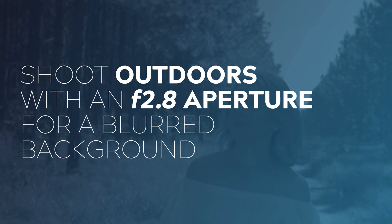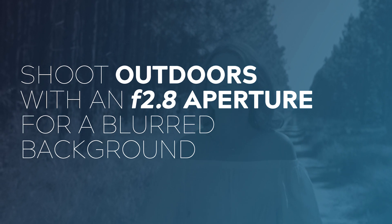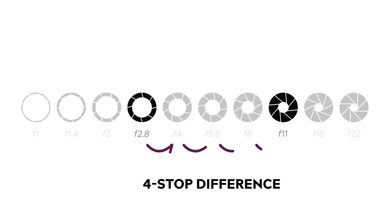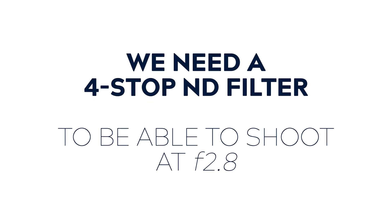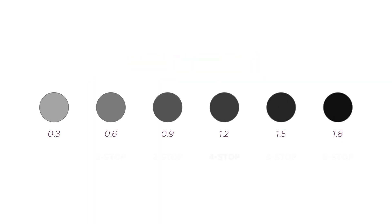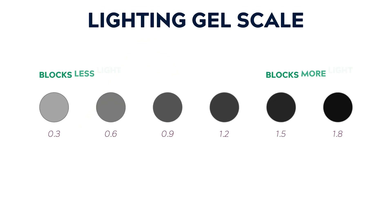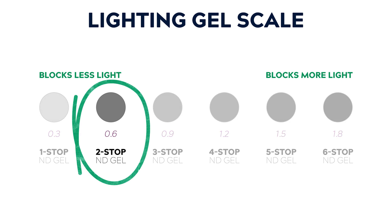Let's look at another real world example. Say you want to shoot outdoors but you want to set your aperture to f2.8 for a nice blurred background. When you go outside, you find your camera can only expose properly up around f11. The difference between f2.8 and f11 is a four stop difference, so you need a four stop ND filter — which is an ND 1.2. The same applies to lighting gels: if you've got a light that is two stops too bright and you need to cut it down, you'd need a two stop ND gel, which is ND 0.6.